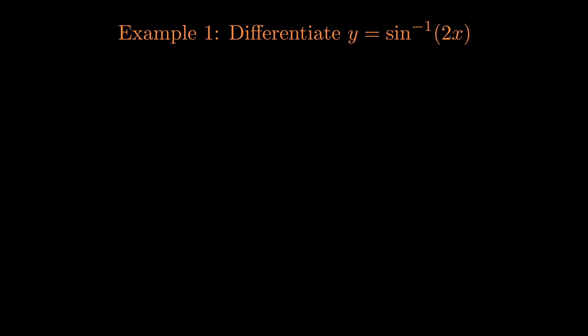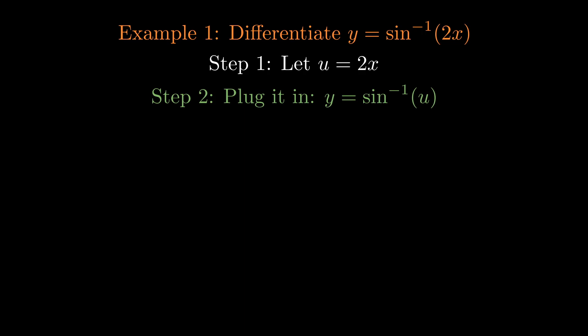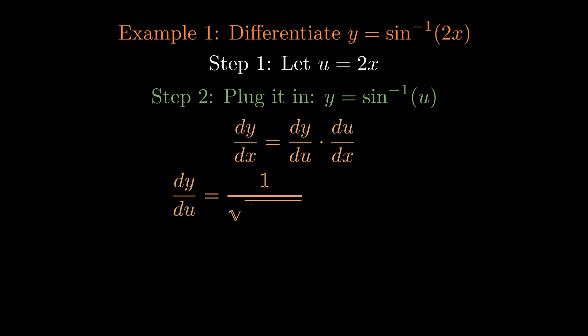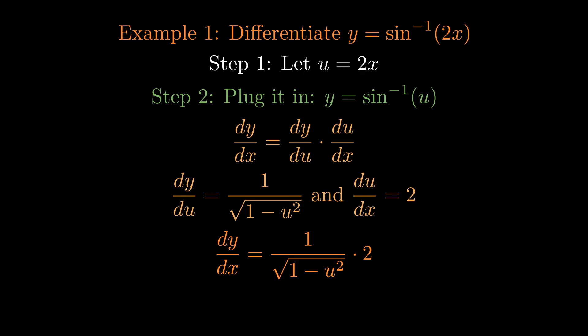Now let's look at an example: differentiate arcsin(2x). The outer function is the arcsine function and the inner function is 2x. Let u equal 2x. By the chain rule, dy/dx equals dy/du times du/dx. We know dy/du is 1 over the square root of 1 minus u², and du/dx is 2. Multiplying gives 2 over the square root of 1 minus u². Substituting 2x back in, the final answer is 2 over the square root of 1 minus 4x².